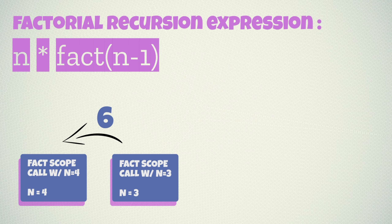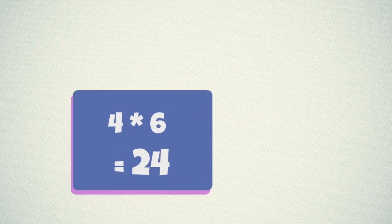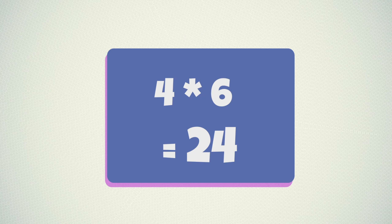The return value is used to calculate 2 into 1, and the result is then returned and the frame is discarded. Similarly 6 is also returned and finally the result is returned as 24 by calculating 6 into 4. This is how recursion behaves in execution. Now let's get back to our discussion.